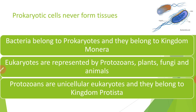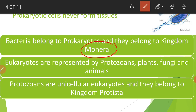Prokaryotic organisms are always unicellular — as a result, they never form tissues. Bacteria belong to prokaryotes and they belong to kingdom Monera. Monera kingdom includes unicellular prokaryotic cells normally referred to as bacteria. Eukaryotes are represented by a wide range of organisms, like protozoans, plants, fungi, and animals.